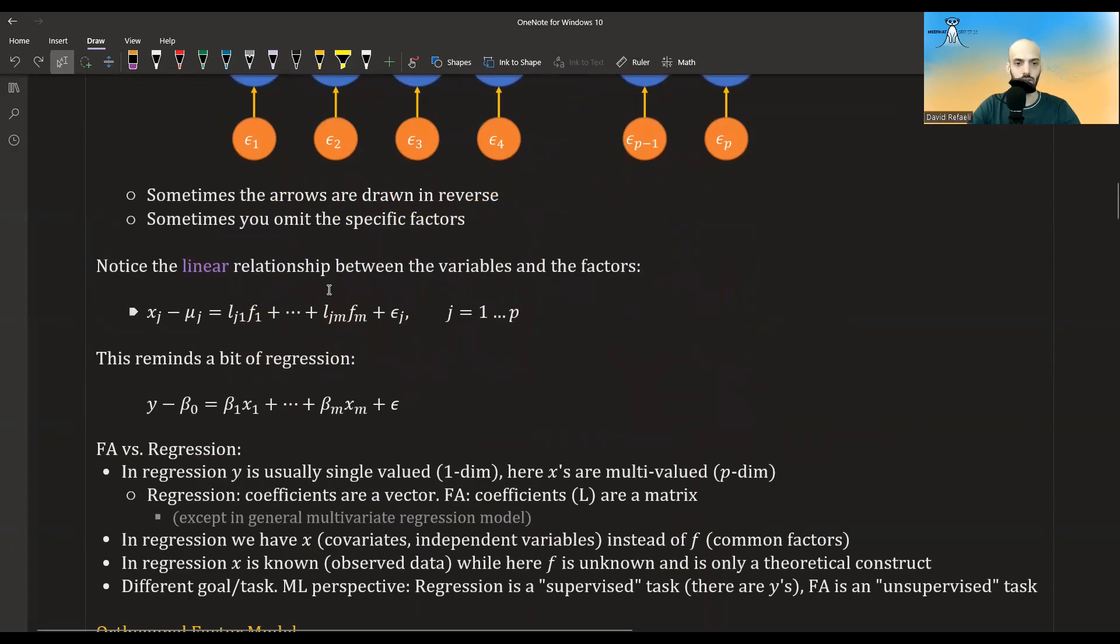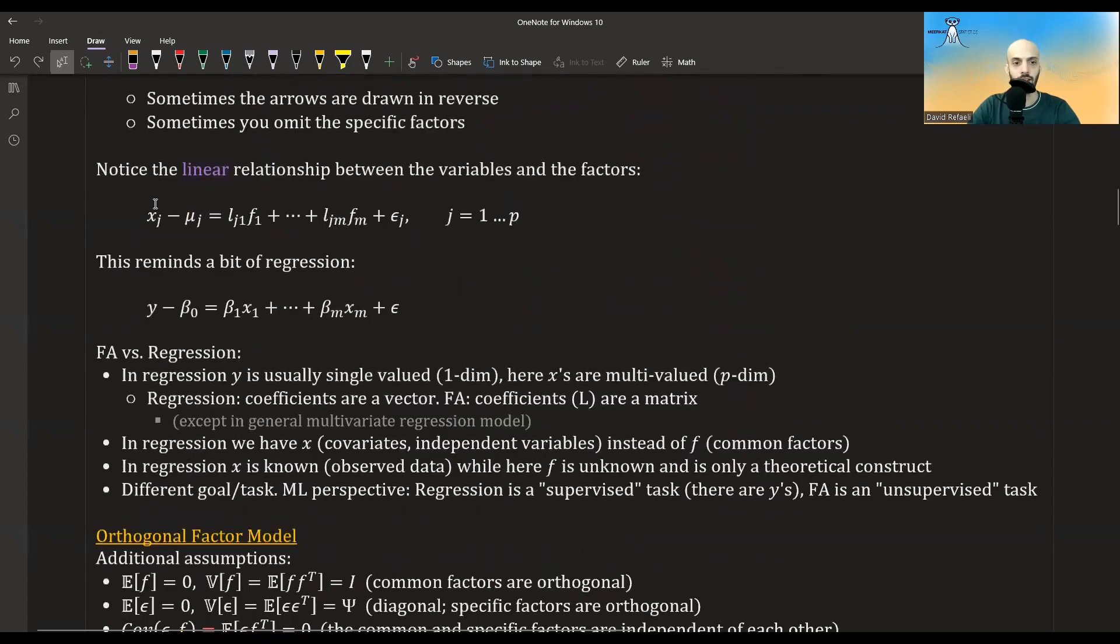Let's look a bit closer at this equation. At the first glance, it might remind some of you of regression. So this is how factor analysis looks like. This is the equation of regression. But yeah, factor analysis and regressions are very different. In regression, y is usually just one dimension. But here, x is multi-dimension. There's p equations here. So it also means that in regression, the coefficients, all the betas here are just a vector. But in factor analysis, the coefficients are a matrix.